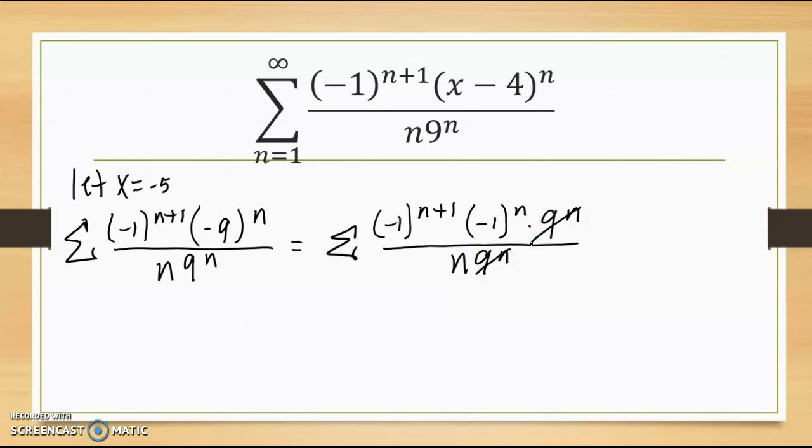Now these guys cancel each other out. Exponent rules again. When I'm multiplying like bases, I add my exponents together. Divided by n.